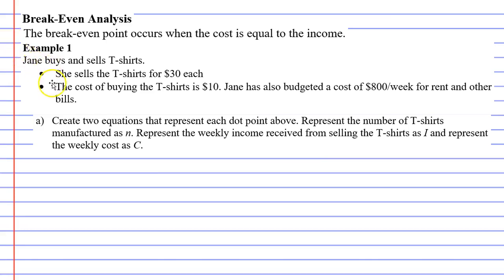It says Jane buys and sells t-shirts. Dot point one says that she sells the t-shirts for $30 each. Dot point two says that the cost of buying the t-shirts is $10, but Jane also has to budget other costs such as rent and bills. And this all comes to a total of $800 per week.